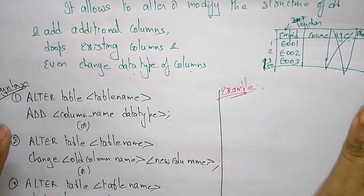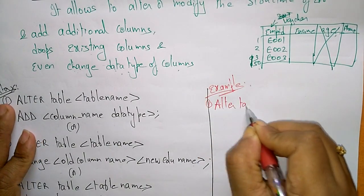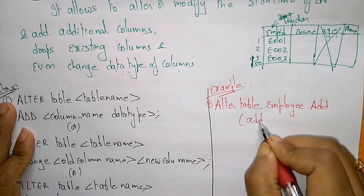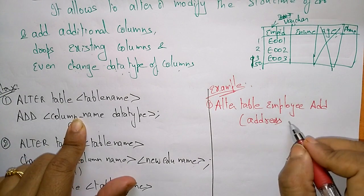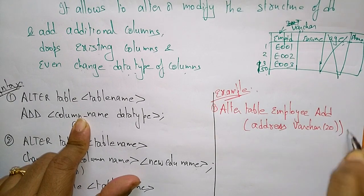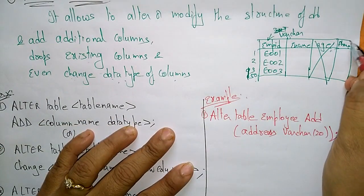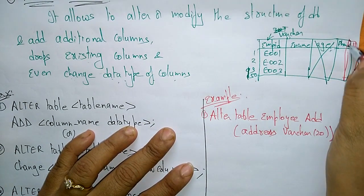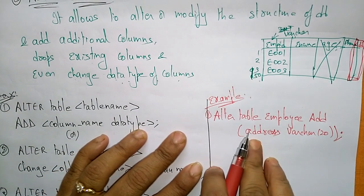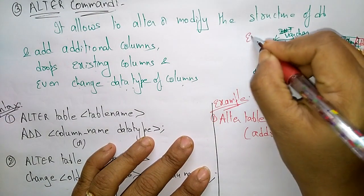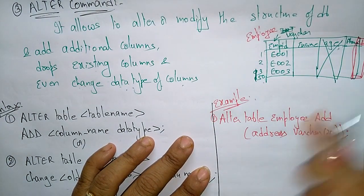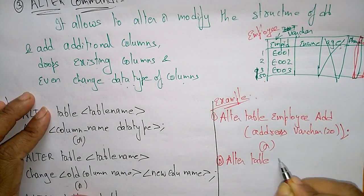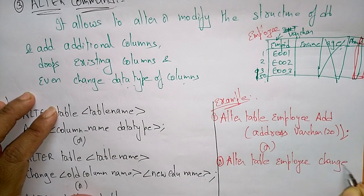So I will take the employee table. First example: ALTER TABLE employee ADD address VARCHAR(20). Here I am adding one more column — the address column. Previously only employee ID, employee name, age, and phone number existed. Now I want to add another column: address. So when I write this command, it adds the address VARCHAR(20) column to the employee table.